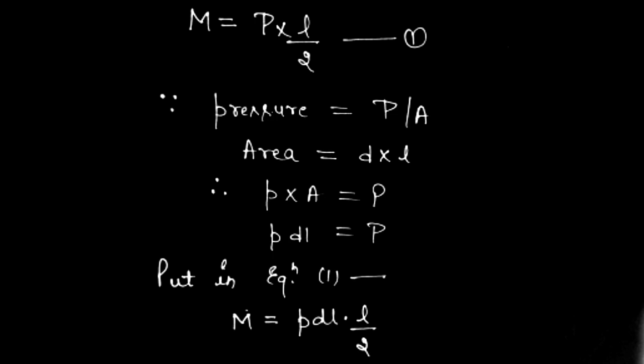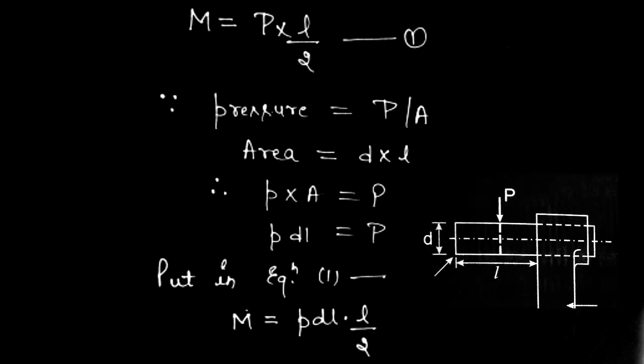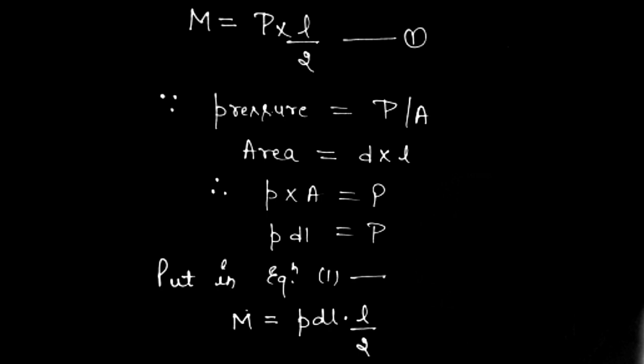This pin is pressure-fit in the crank arm. Since it is a pressure fit, we will find the bearing pressure: pressure equals P divided by area. The area here is the projected area, which is D multiplied by L — the diameter times the length. So the projected area is D × L, and from this we can express P as pressure times D times L.